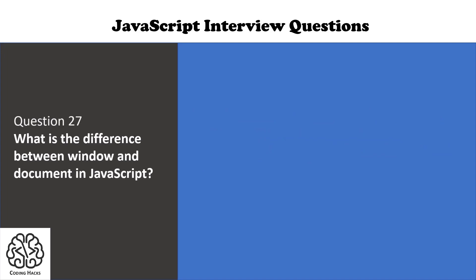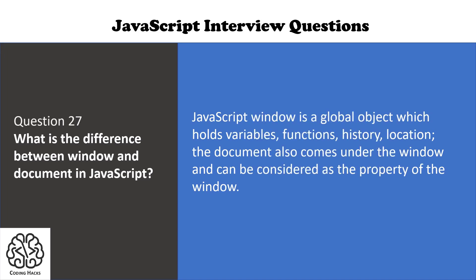The next question is: what is the difference between window and document in JavaScript? The JavaScript window is a global object which holds variables, functions, history, and location. The document also comes under window and can be considered as a property of the window.